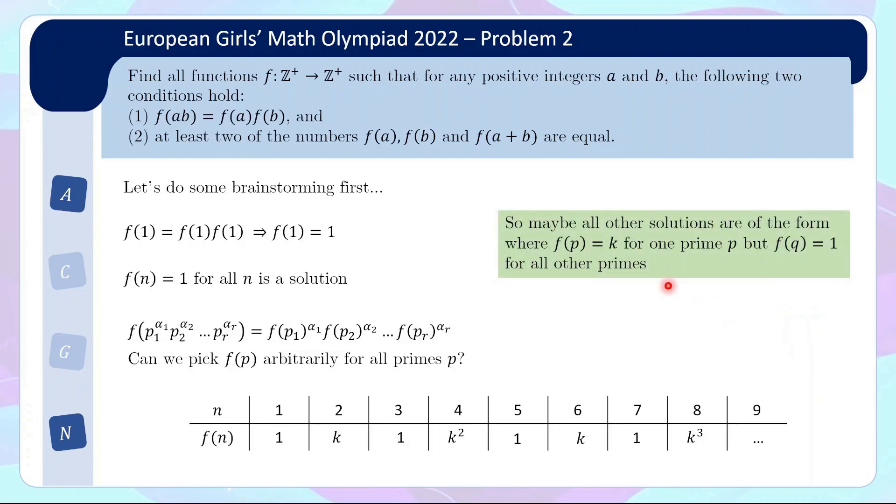So maybe you postulate that all the other solutions are of the form where we actually have only one prime that we can choose freely. And let's say f of that prime is k. And for all other primes q, we are forced to constrain ourselves to f(q) equals 1. So in other words, maybe all other solutions are of the form f(n) equals k to the power of v_p(n), where k is an integer bigger than 1, p is the prime where we get the special privilege of choosing, and the valuation function is basically the function that gives you the largest power of p dividing n. So in this case, p is 2, k is just k, and so something like 6, the valuation function here is 1, and so we get f(6) is k.